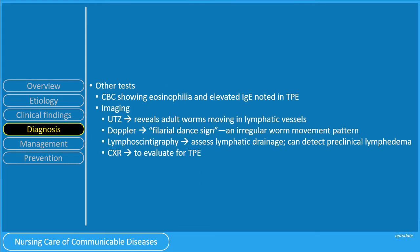Other tests include CBC showing eosinophilia and elevated IgE noted in tropical pulmonary eosinophilia. Recall the mnemonic: IgE, E4EU — worms. So in filariasis, IgE is elevated. Imaging studies can also be done, including ultrasound, Doppler, lymphoscintigraphy, and chest X-ray.